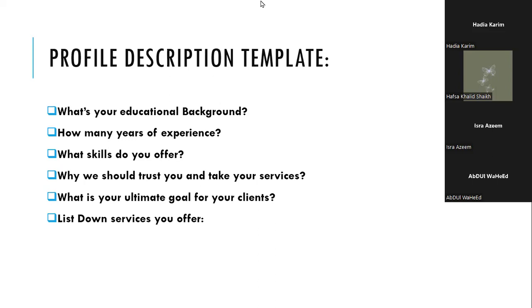For your ultimate goal, you can write about customer satisfaction — that your client should be happy when accepting your delivery. You can say 'when my clients are happy, I'm happy.' Or you can say getting repeat orders is my goal because I am consistent, authentic, and organized. Then list down the services you offer one by one.